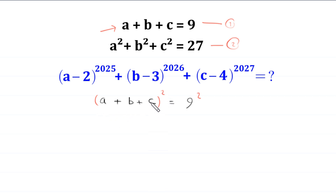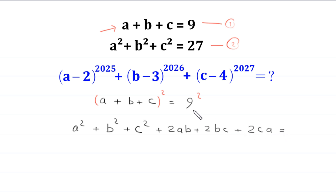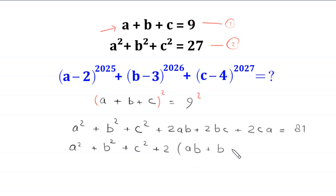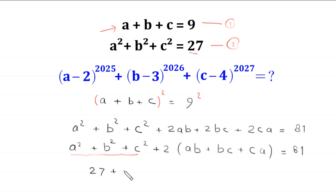According to the algebraic identity, a plus b plus c whole squared will become a squared plus b squared plus c squared plus 2ab plus 2bc plus 2ca, is equal to 9 squared which is 81. We can factor out a squared plus b squared plus c squared from those terms, and replace it with the value 27 from equation 2. So this becomes 27 plus 2 times ab plus bc plus ca is equal to 81.